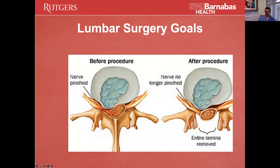Sometimes you can also take the disc fragment — you can reach around the nerve root and take the disc fragment for a 360-degree clean out. Other times, if it's too stuck or difficult to access, you only do a 180-degree clean out, basically like a convertible, but that still gives the nerve root room.